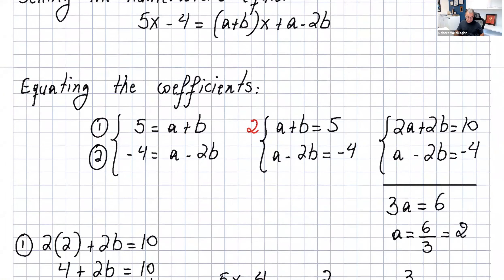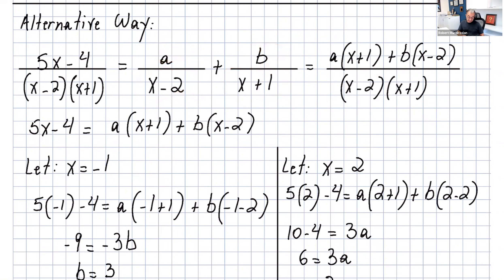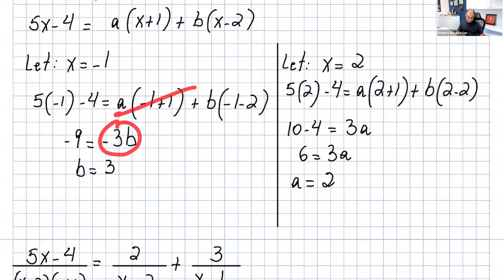Now there is another way of finding a and b — the alternative method. So you write 5x minus 4 over x minus 2 times x plus 1 as a over x minus 2 plus b over x plus 1. Finding the LCD and multiplying gives 5x minus 4 equals a times x plus 1 plus b times x minus 2. Since x equals negative 1 makes the first term zero, substitute x equals negative 1: you get negative 9 equals negative 3b, so b equals 3.